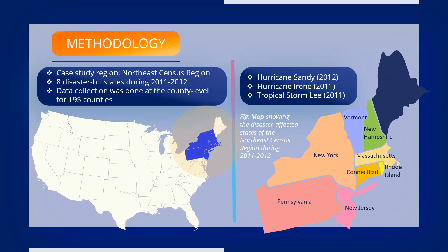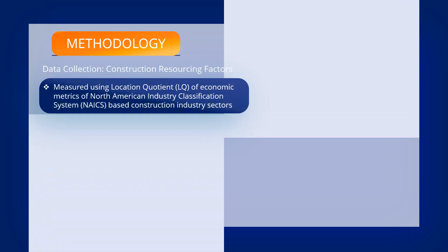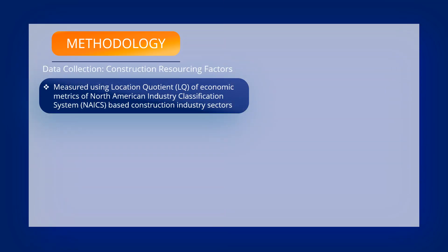The Northeast Census region of the U.S., comprising eight disaster-affected states, was used as a case study region. This region was hit by some catastrophic weather-related disasters during 2011 and 2012, including Hurricane Sandy and Hurricane Irene. Data was collected at the county level for this study region. Construction resourcing factors were measured on the basis of the location quotient of the economic metrics of the North American Industry Classification System based industry sectors.